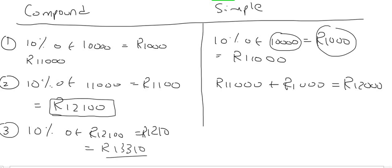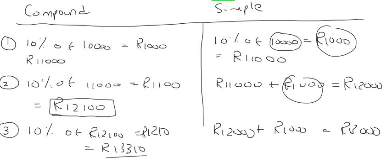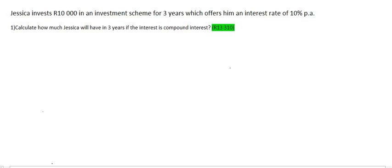Simple interest is still just going to give her the same old thousand Rand. And so Jessica would end up with thirteen thousand Rand at the end if it was simple interest. So compound interest uses the new amount. Simple interest always uses the original or the first amount.